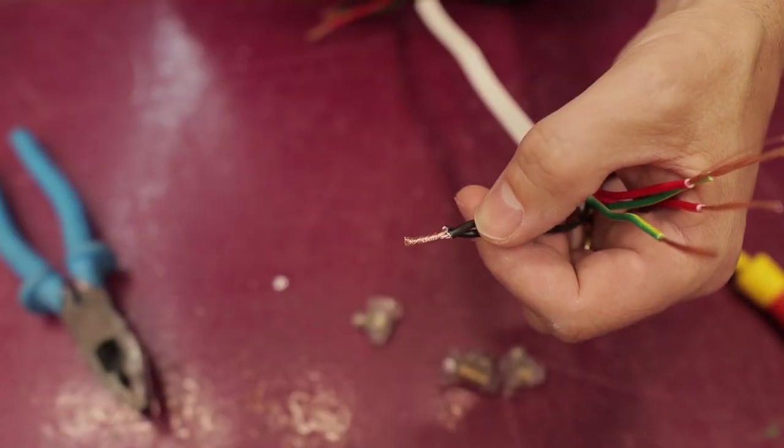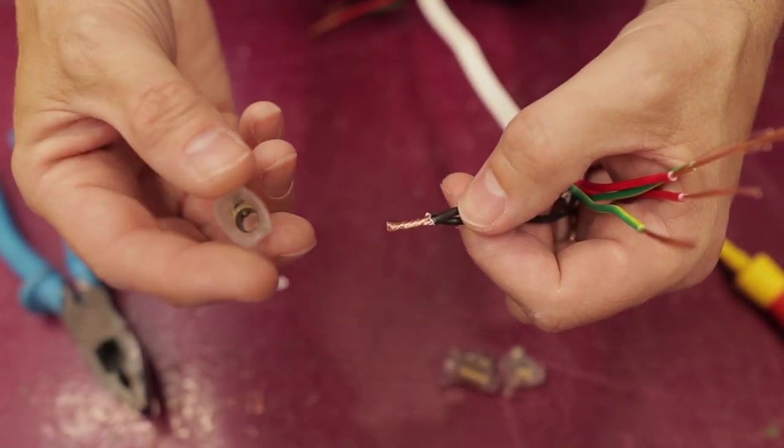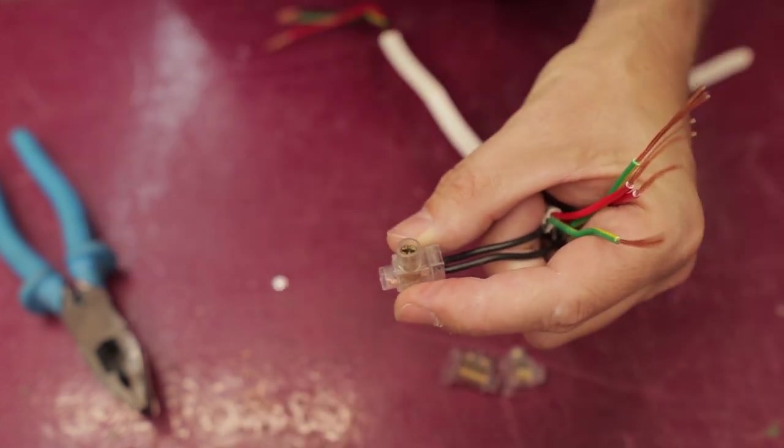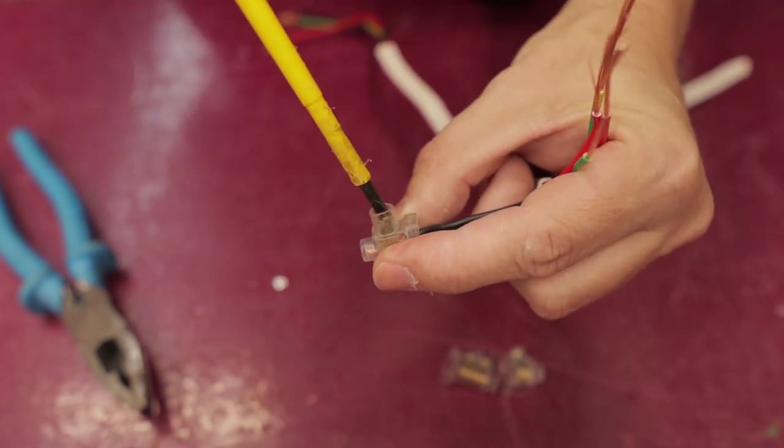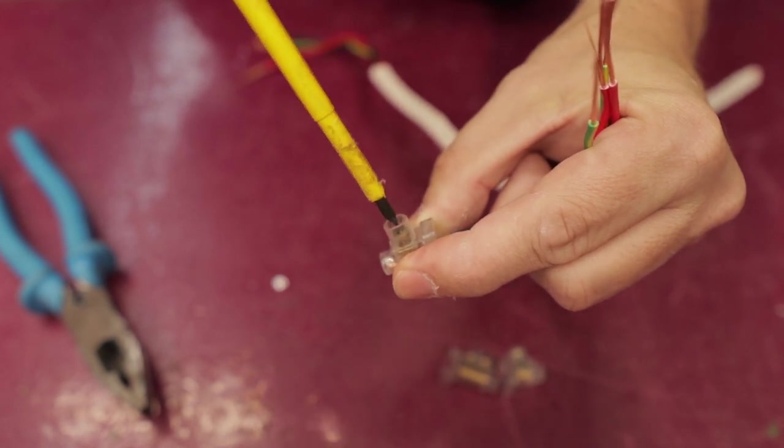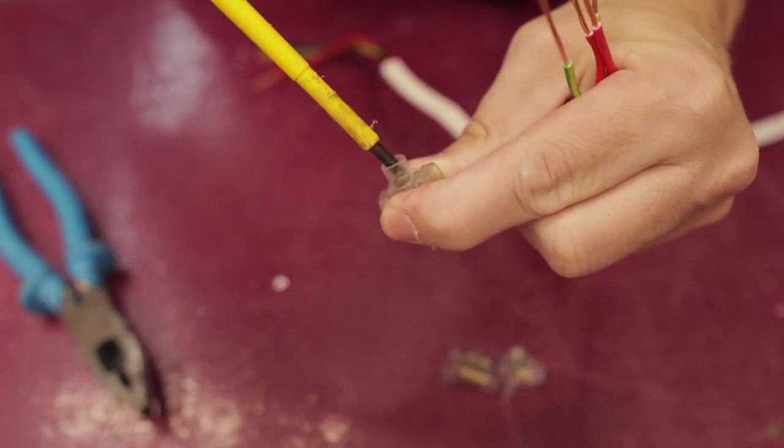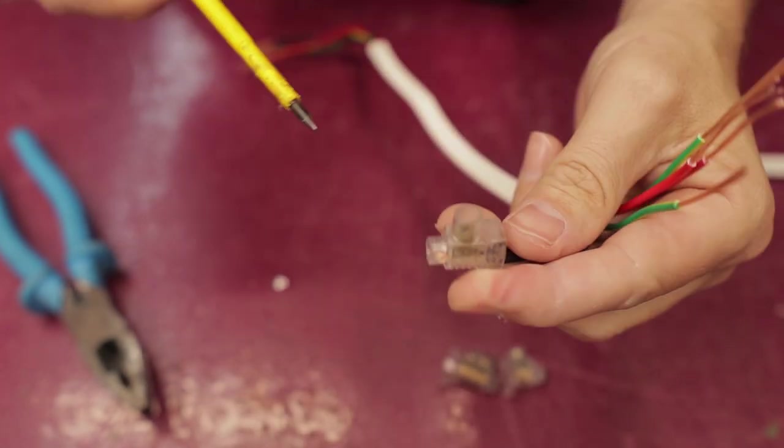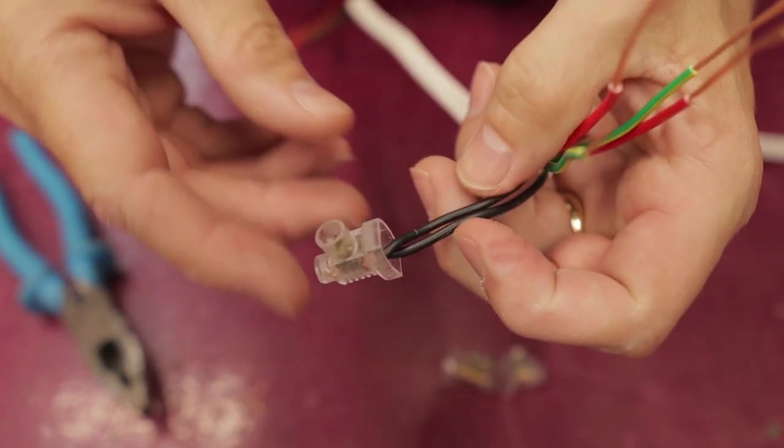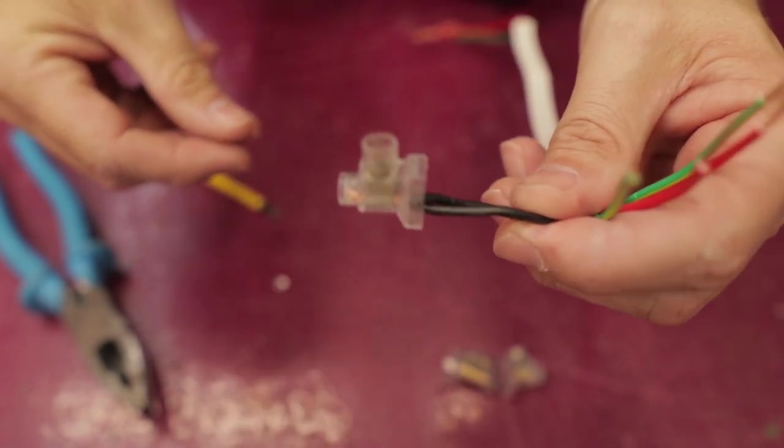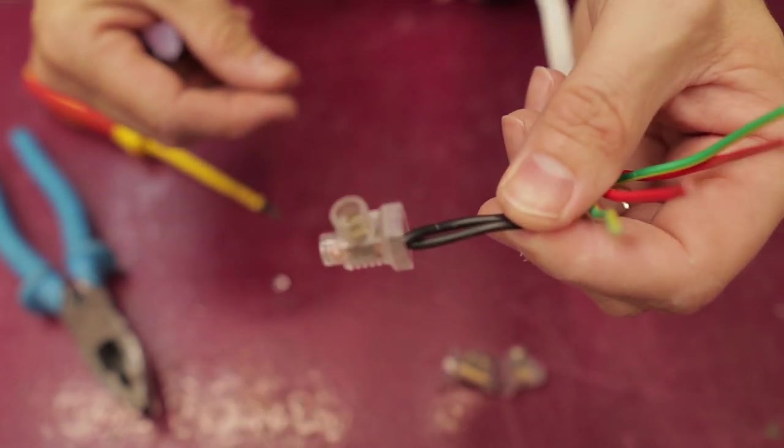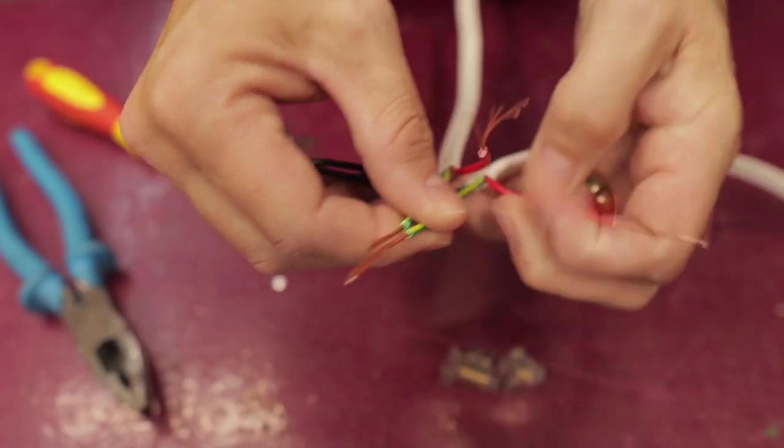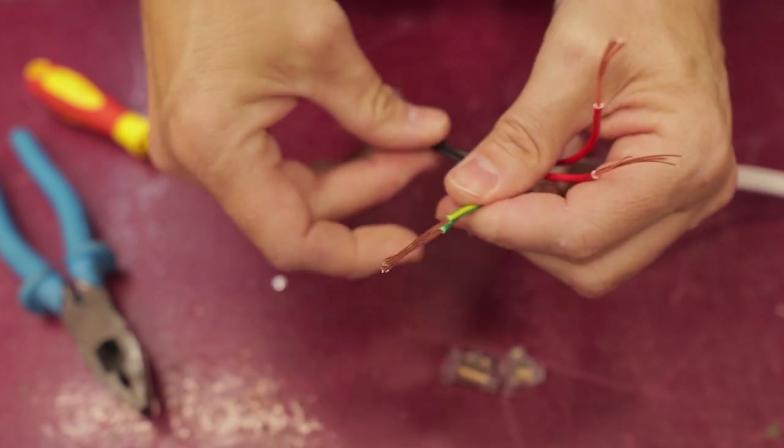Now we're going to take our connector, put the connector on and just screw it down like so. You can see that the connector is now on, and I repeat the same process for the next two wires. Keep in mind that the earth one will have the two screws on it.